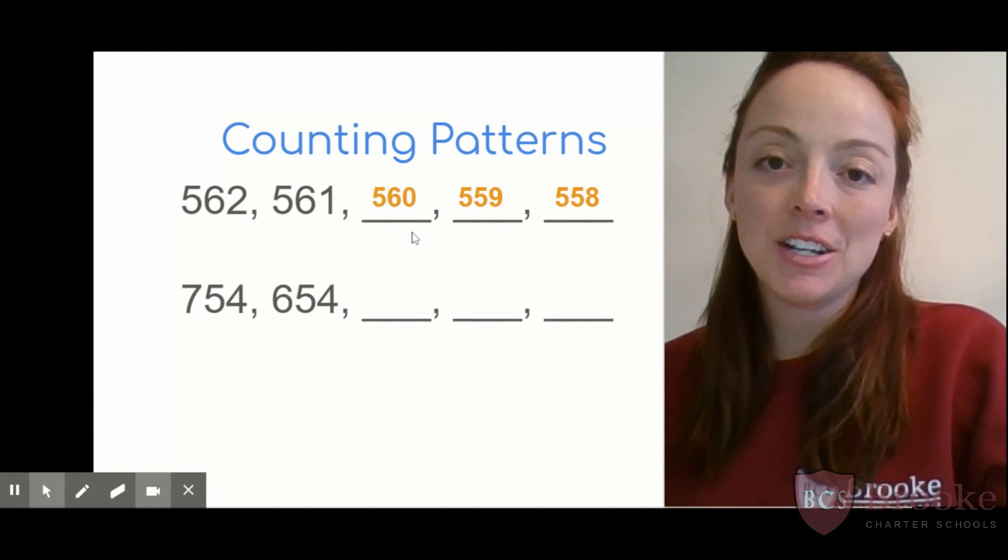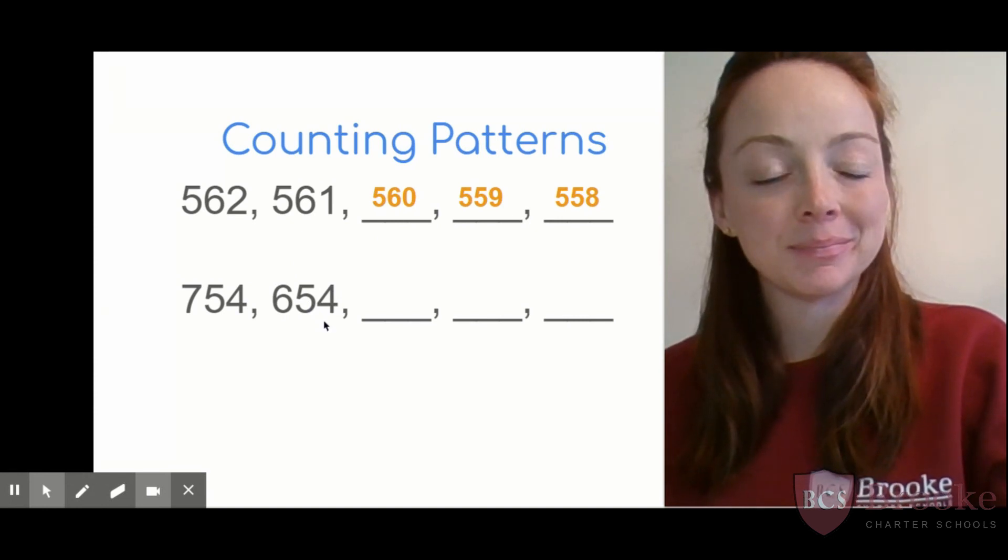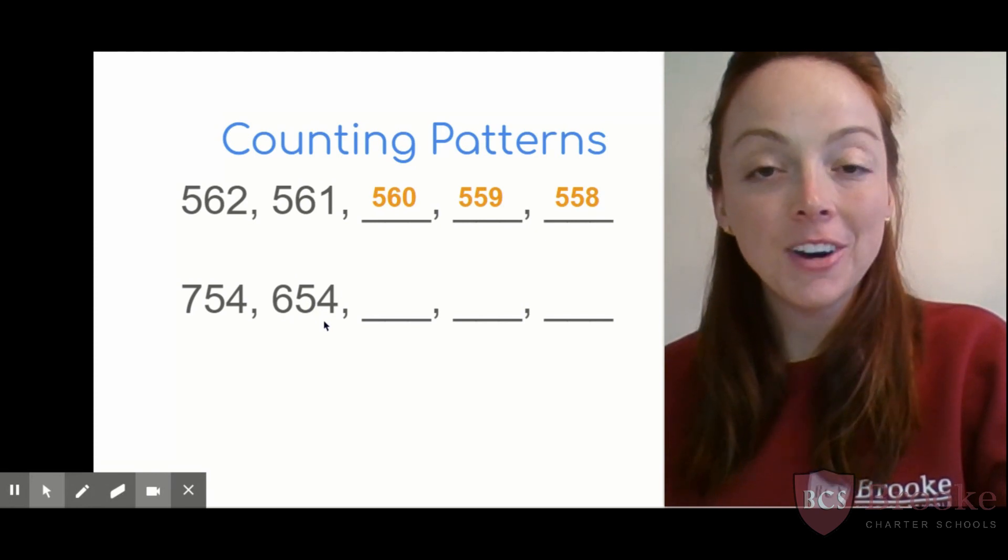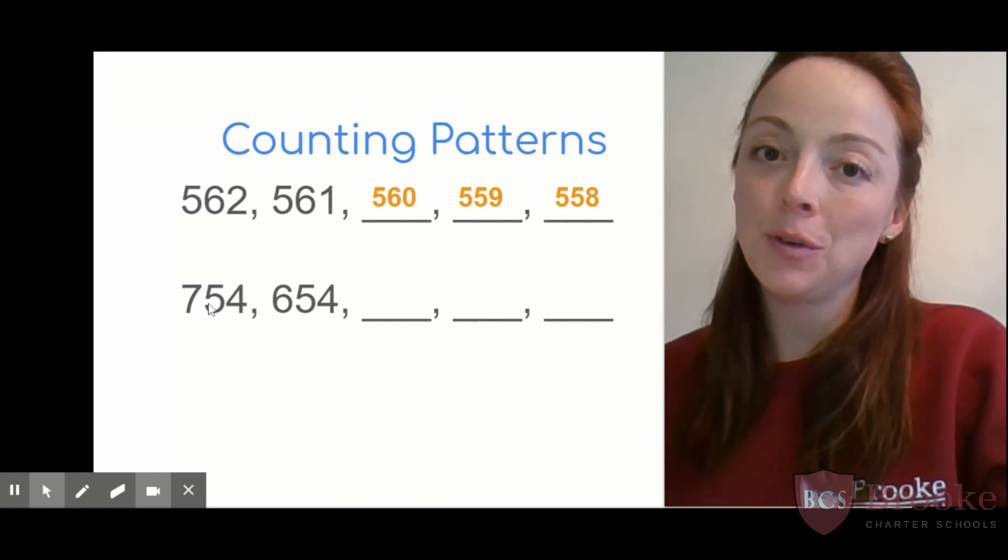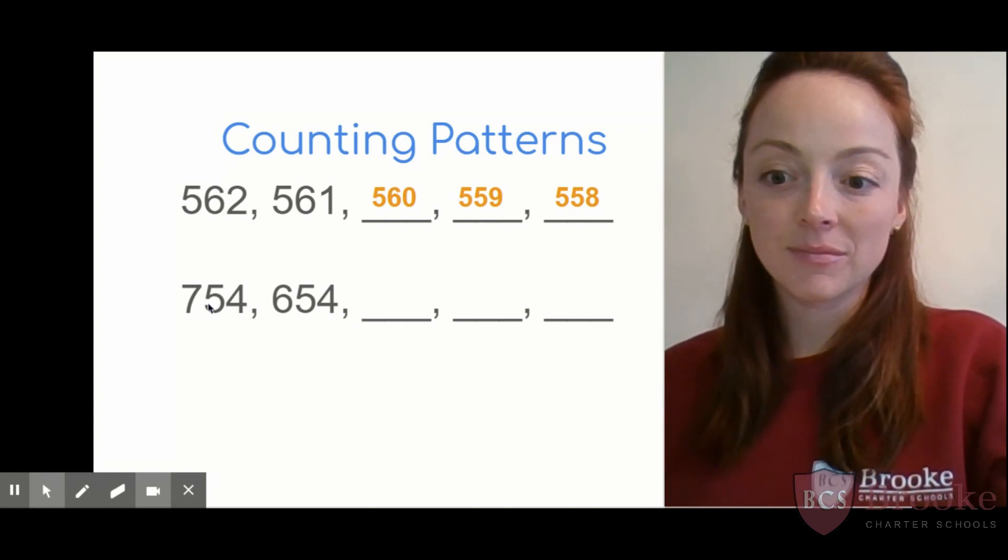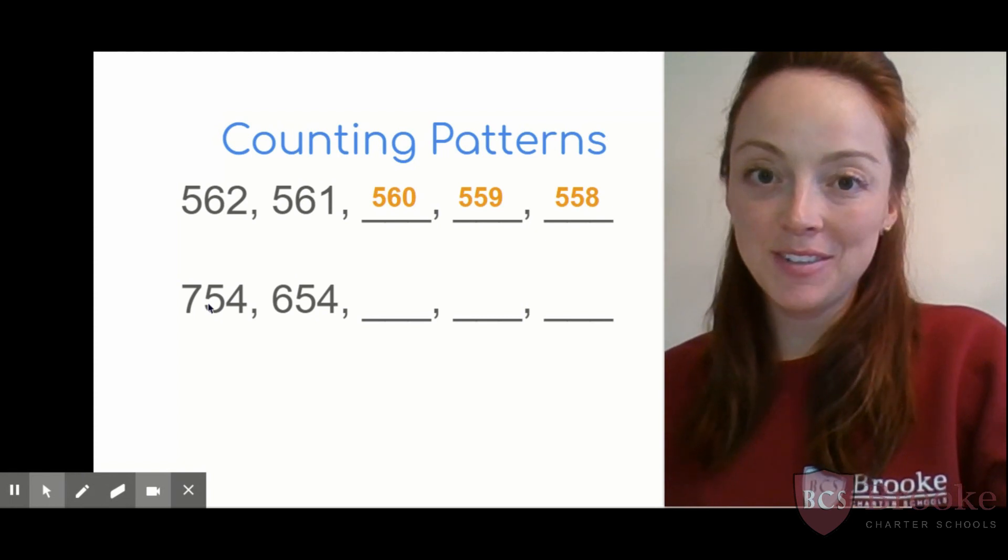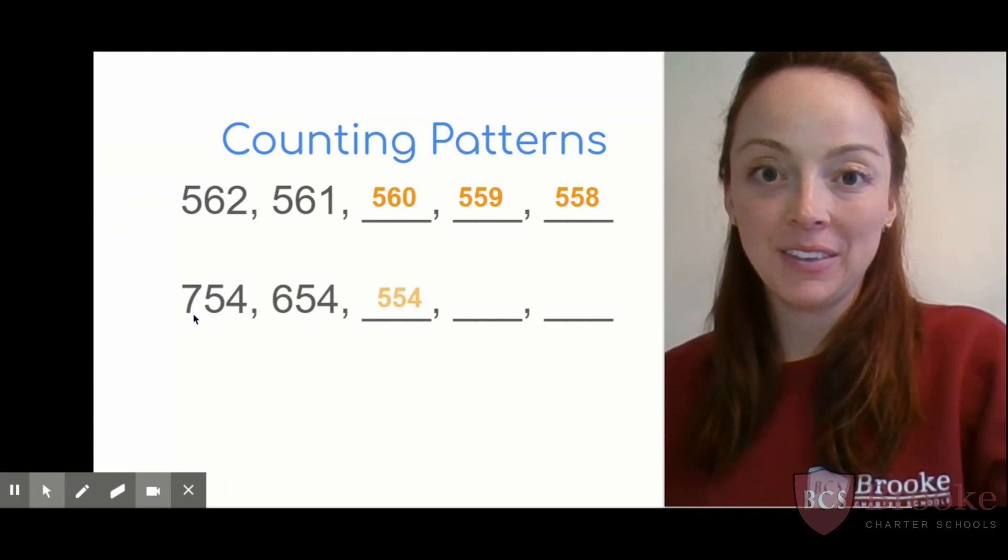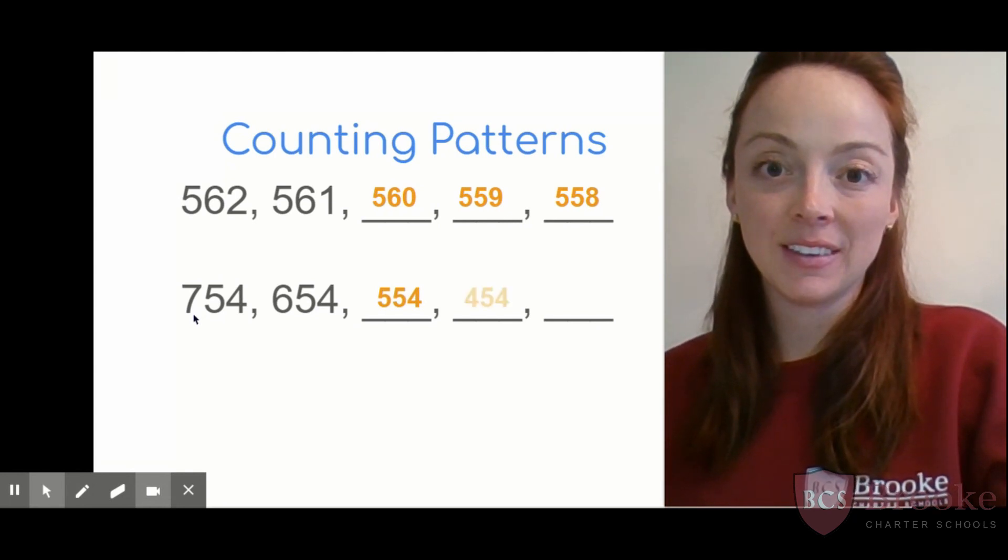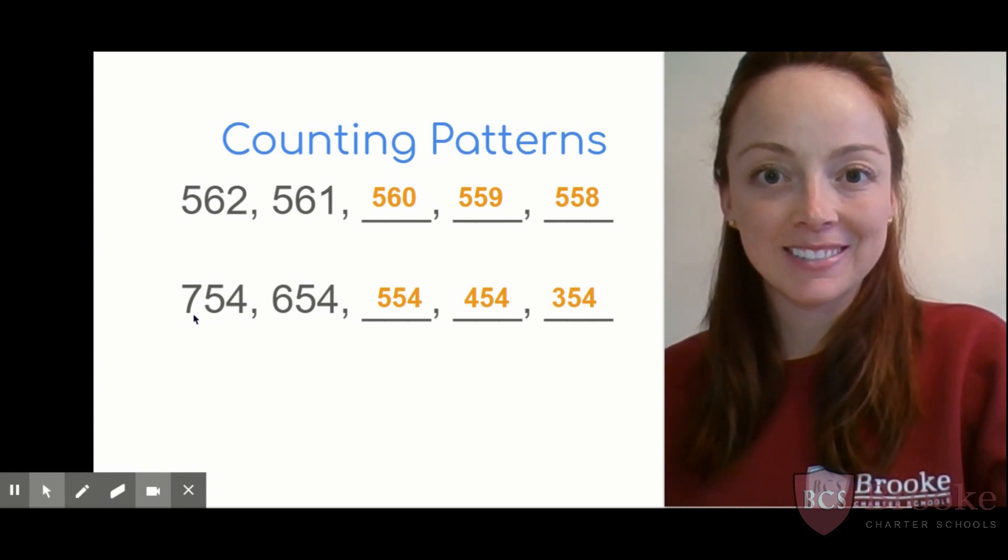Count with me starting at the first number. 754, 654. What's changing in this pattern? Right, the hundreds. I notice the tens and the ones are staying at 54. Only the hundreds are changing. See if you can figure out my next three numbers. Go. Let's see if you're right. Counting at the first number. 754, 654, 554, 454, 354. Nice job. This pattern was counting up or down by 100. That's right, down by 100.